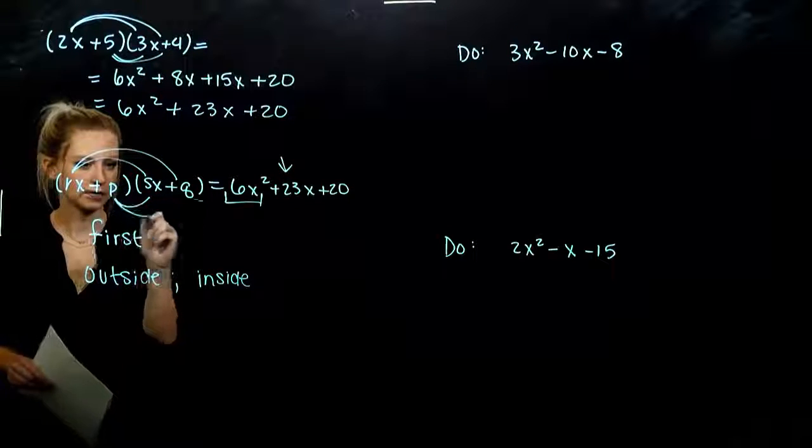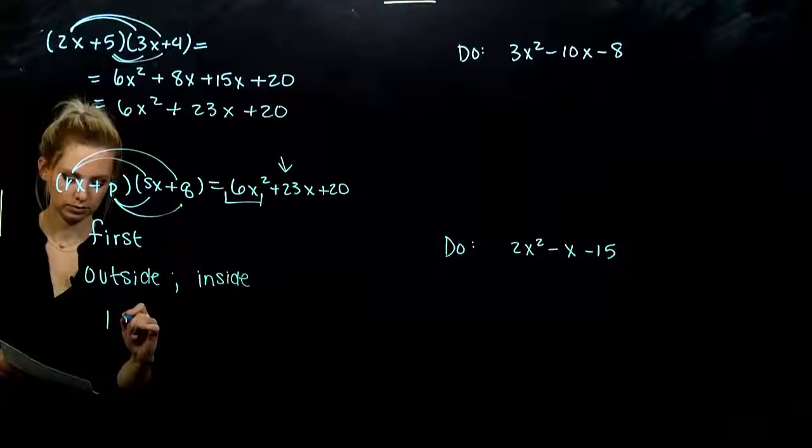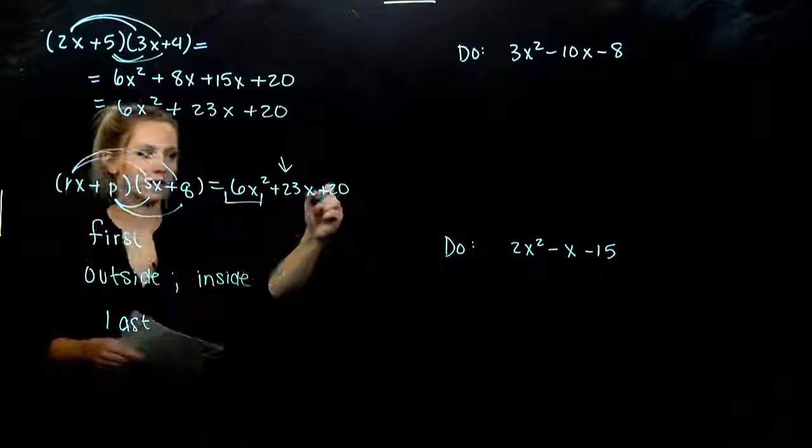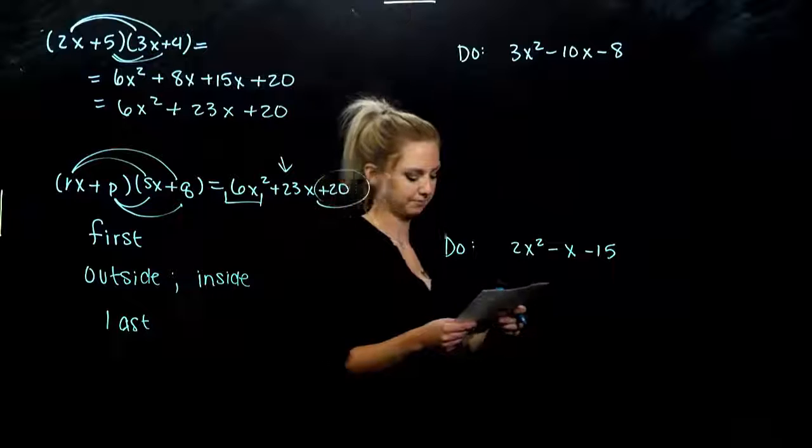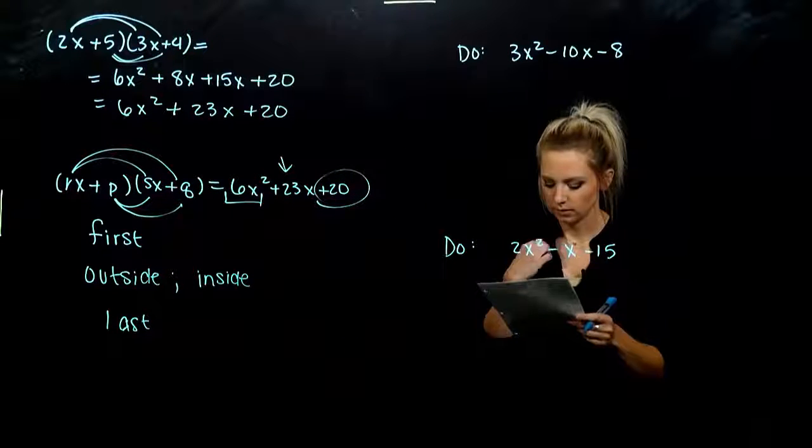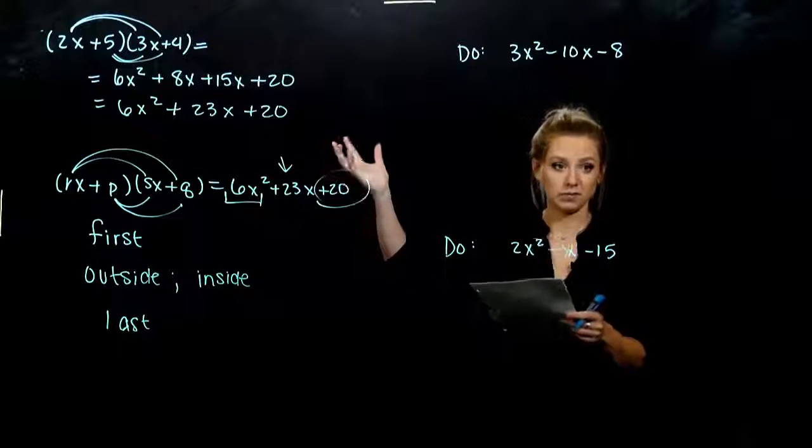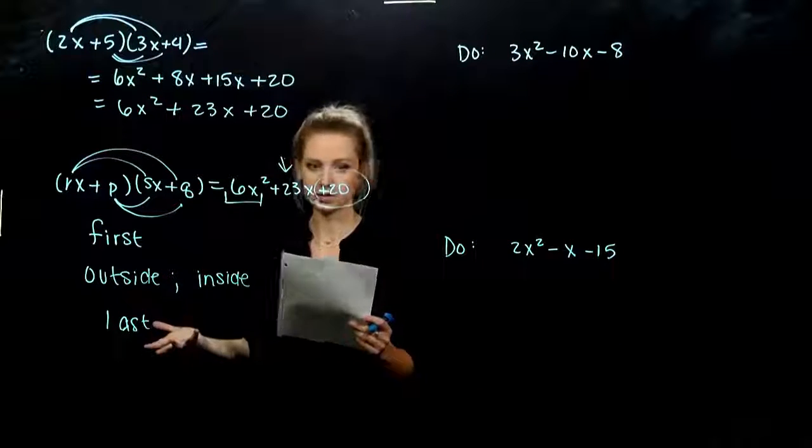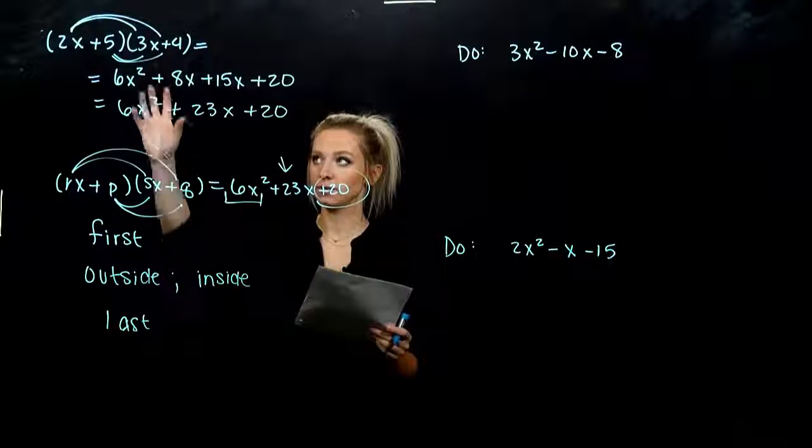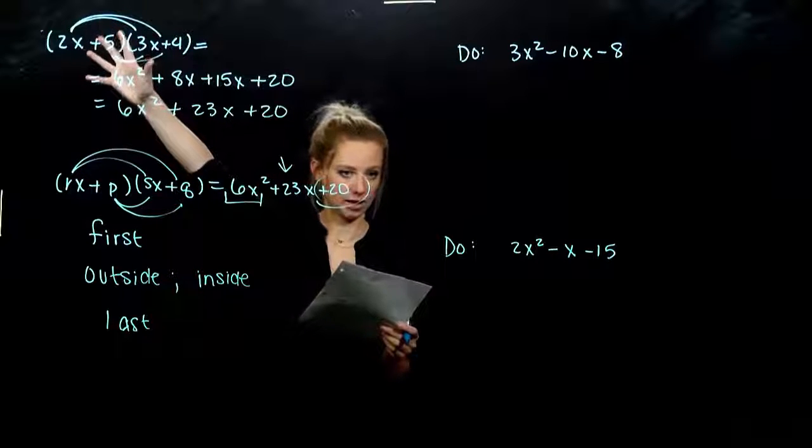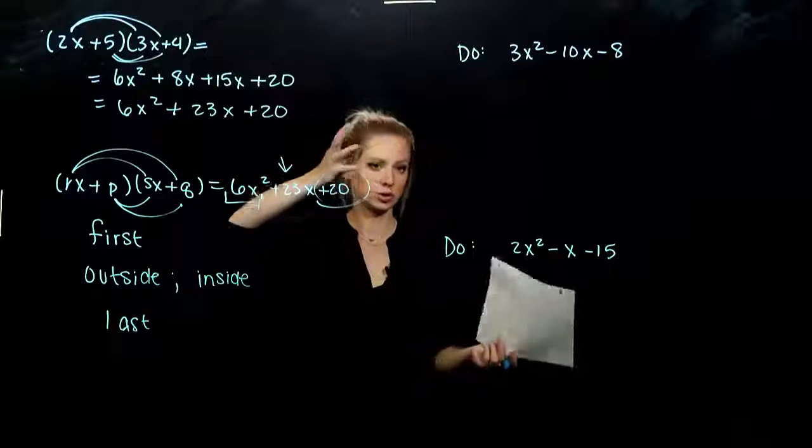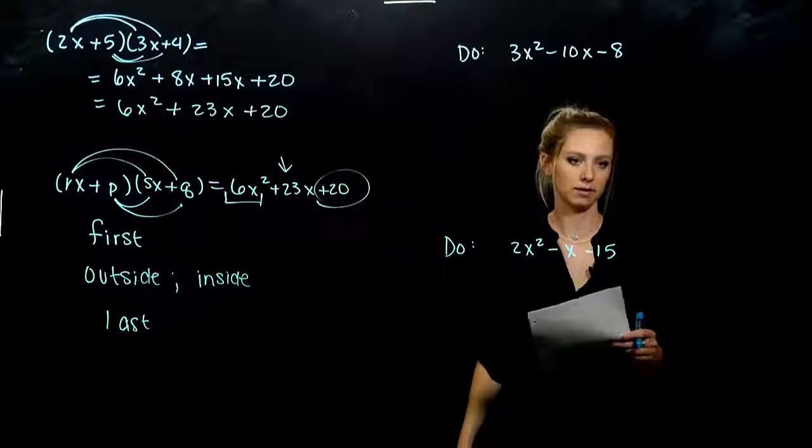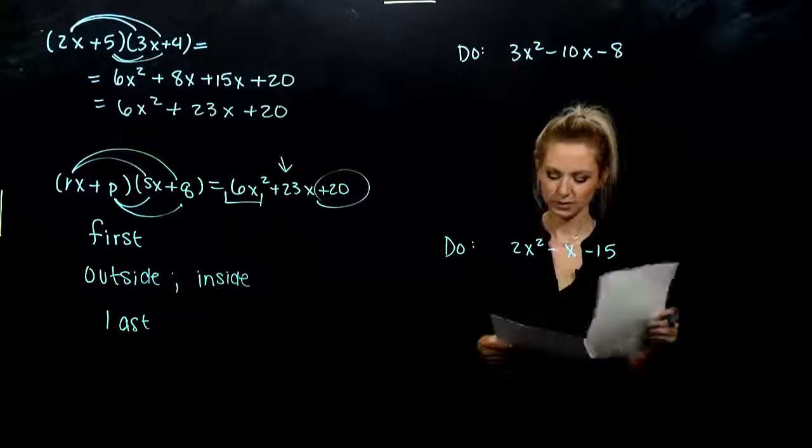Then the product of the last two has to give us 20, the thing on the end, the constant back there. So we know the answer because we started with the multiplication, but it's literally just going to be trial and error if we didn't have the products to start out with. So we'll just do two examples, nothing too overwhelming, and again we'll have a better method in the next section.